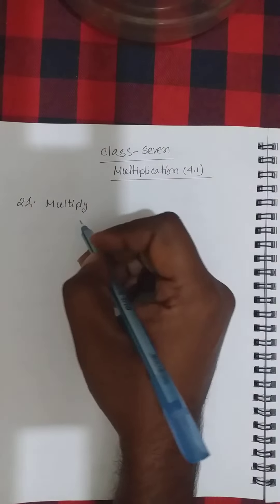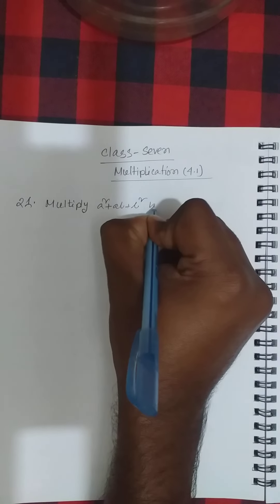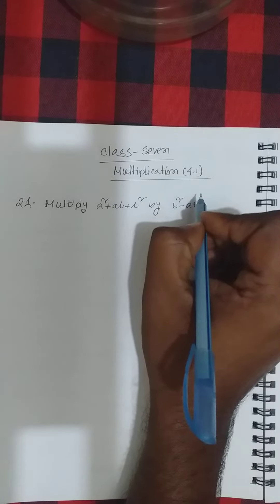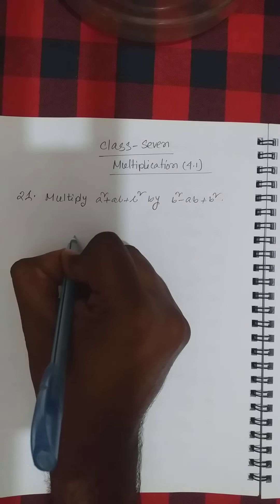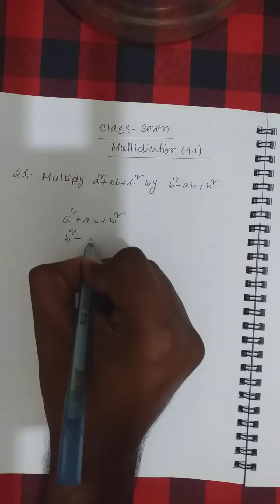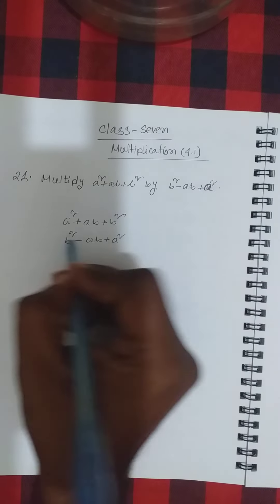Multiply a-squared plus ab plus b-squared by b-squared minus ab plus a-squared. At first we write down our first expression: a-squared plus ab plus b-squared. Second expression: b-squared minus ab plus a-squared.